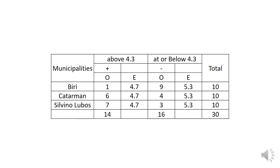For the column totals: Biri has 1 plus 9 = 10, Katarman has 6 plus 4 = 10, and Silvino Lobos has 7 plus 3 = 10. The grand total is 30.